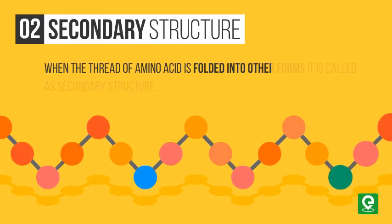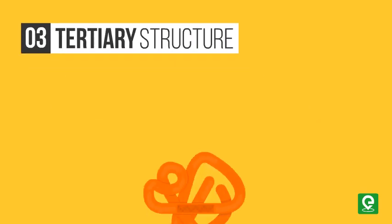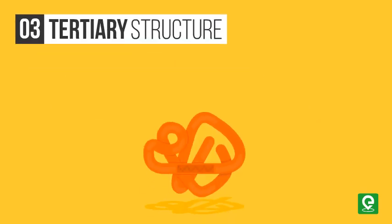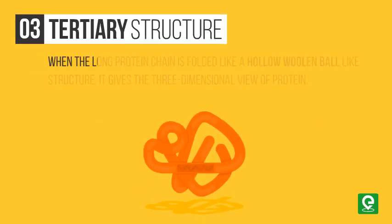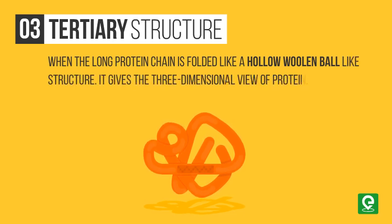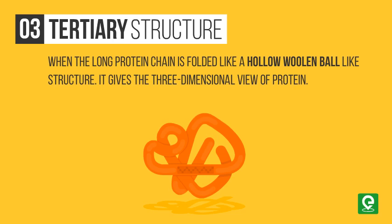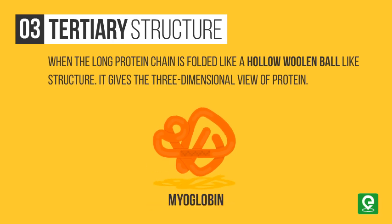Secondary structure: when the thread of amino acids is folded into other forms, it is called the secondary structure. Tertiary structure: when the long protein chain is folded like a hollow wooden ball-like structure, it gives a three-dimensional view of the protein — for example, myoglobin.